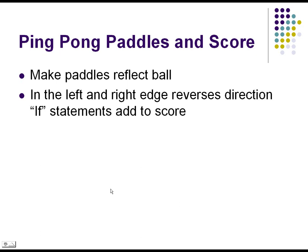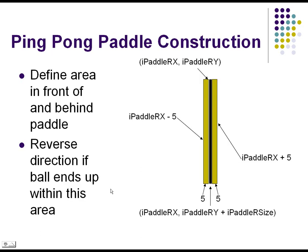First, we need to take a closer look at those paddles and understand a few things about them. With the paddle, it has a very thin line — just a few pixels across. When a ball comes at the paddle, it doesn't come in a smooth line hitting each point as it comes. It jumps. It'll hit here, and then the next point might be three away. It might hit here and here. But you've got these little sort of bounces that it does.